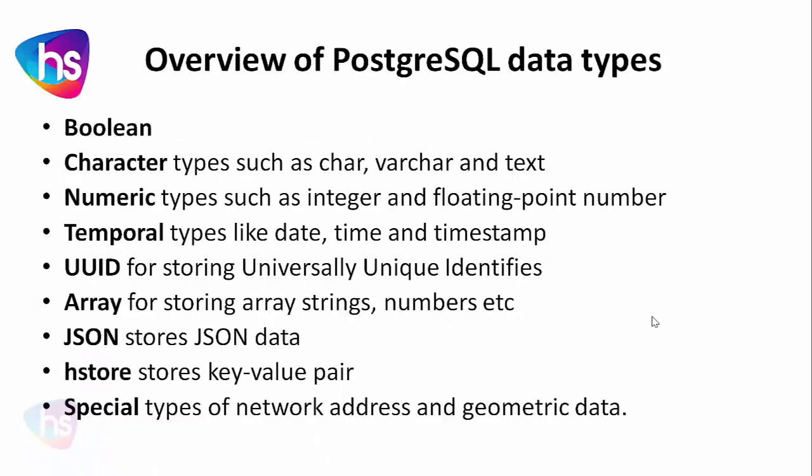Here is an overview of the PostgreSQL data types: boolean; character types such as CHAR, VARCHAR, and TEXT; numeric types such as integer, float, and floating point number; and temporal types like DATE, TIME, and TIMESTAMP.